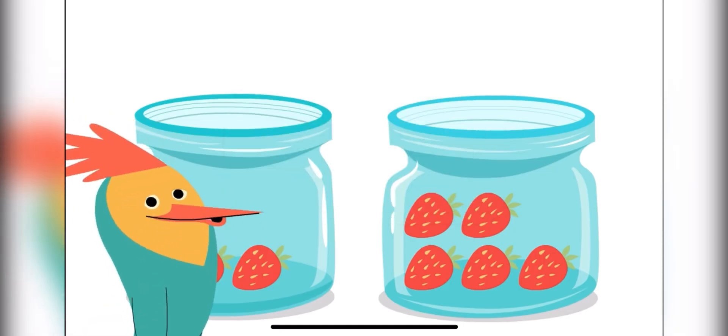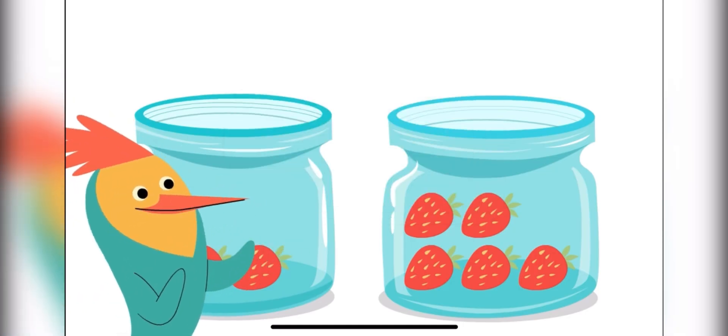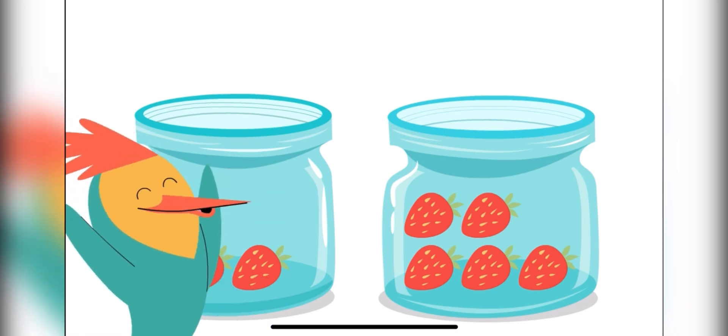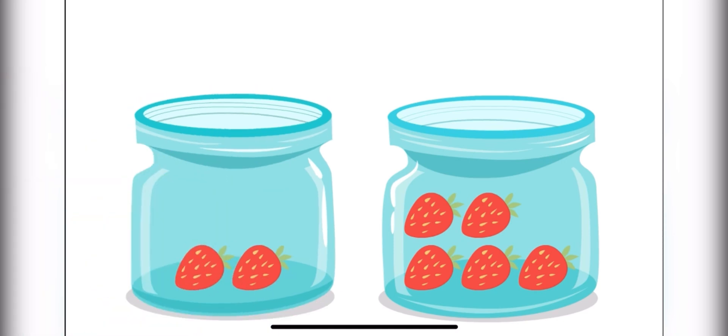Allo wants to eat more strawberries. Which jar has more? Let's count and see! This one has one, two strawberries. This one has one, two, three, four, five strawberries. So this one has more! Allo should eat from this jar.